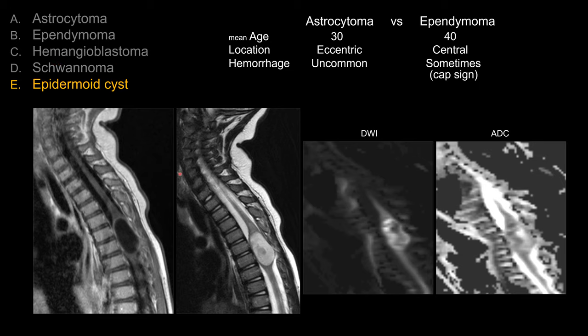For hemangioblastoma, they do present as an intramedullary cystic lesion, but classically they should show an enhancing mural nodule, which we don't see in this case. With hemangioblastoma, there is also an association with von Hippel-Lindau disease.